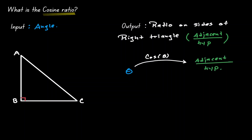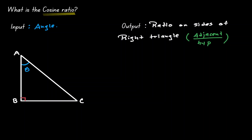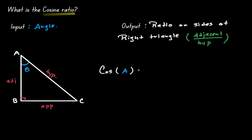Let's look at an example using the triangle on the left. We choose angle A as our reference angle and label the triangle: opposite the 90 degrees is the hypotenuse, opposite our reference angle is the opposite side, and AB is the adjacent side. Evaluating cosine of angle A gives us the adjacent side AB divided by the hypotenuse AC.